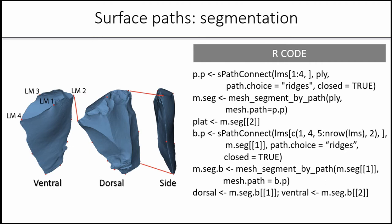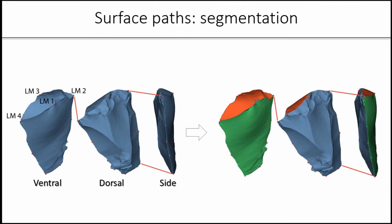You can repeat that same process using this landmark. Landmark 1 to Landmark 4, then all the way around the edge to Landmark 2 and back to Landmark 1, forming a closed path. Then you segment the mesh by that new path. And voila, you have the dorsal and the ventral surface. This is what the result looks like.